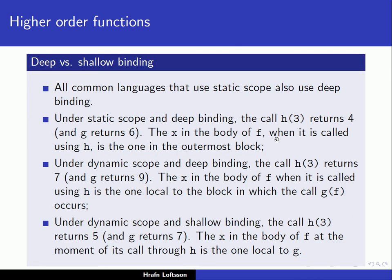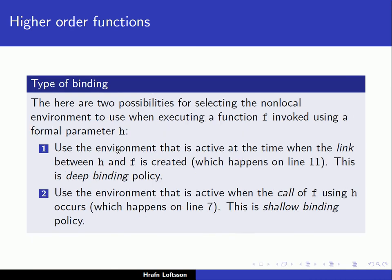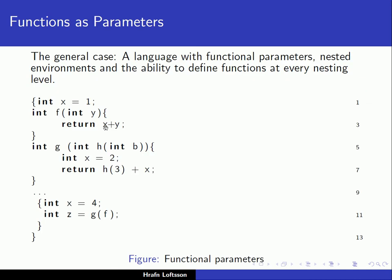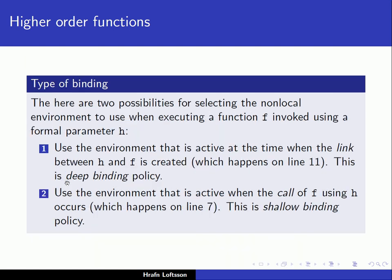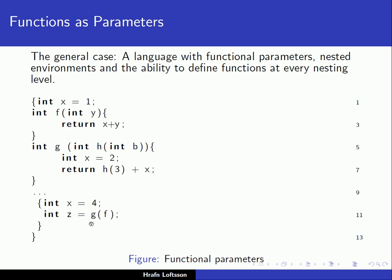So the x in the body of f, when it is called using h, is the one in the outermost enclosing block. Now if we are using dynamic scope and deep binding, then the call to h of 3 returns 7. We are using dynamic scope and deep binding, which means we use the environment which is alive when we associate f with the formal parameter.